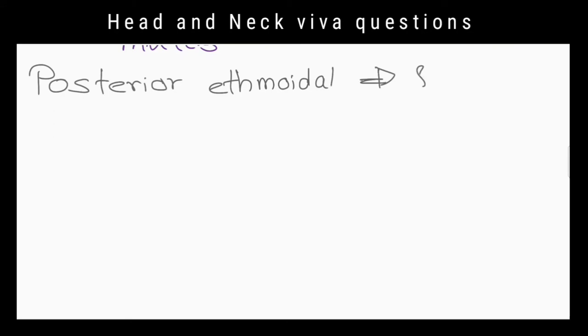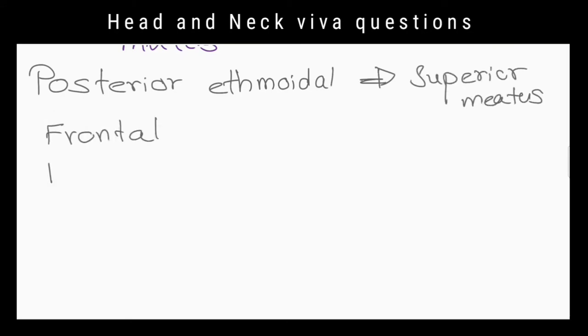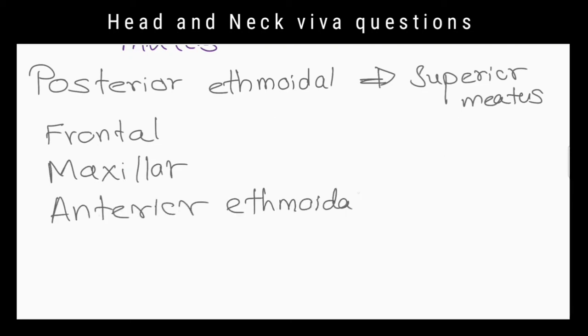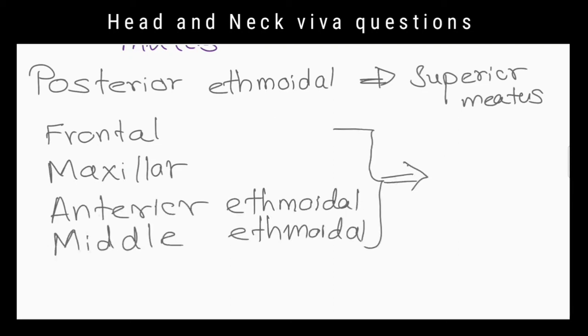To where do they drain? Posterior ethmoidal cells open into the superior meatus. The frontal sinus, maxillary sinus, and anterior and middle ethmoidal sinuses open into the middle meatus.